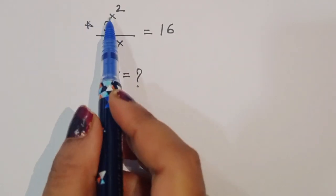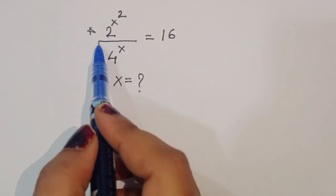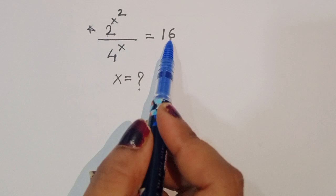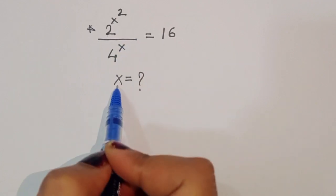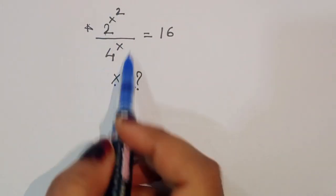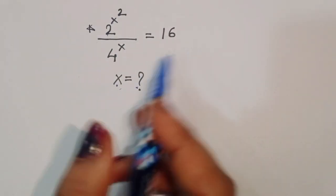The question is: given 2 power x squared divided by 4 power x is equal to 16, we have to find out the value of x. Let's see the solution.